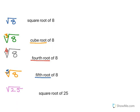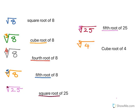This number is read as square root of 25 — there is a 2, which we don't usually write, so it is written as square root of 25. This number is read as fifth root of 25 — it is 5, hence fifth root of 25. The next number is cube root of 4 — there is a 3, hence cube root of 4. The next number is fourth root of 10 — that is 4, hence fourth root of 10.